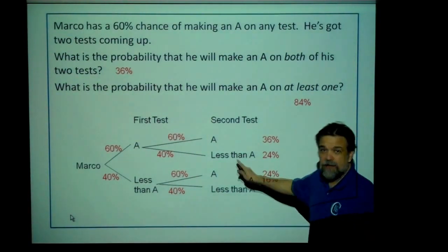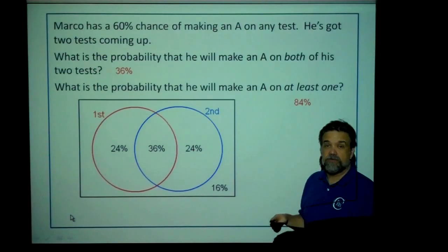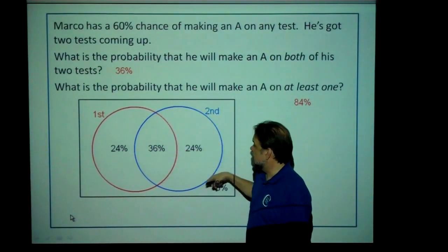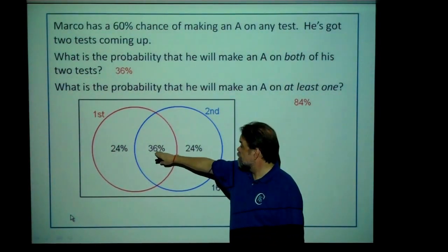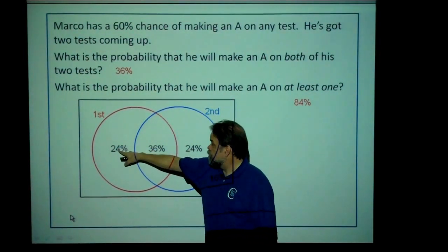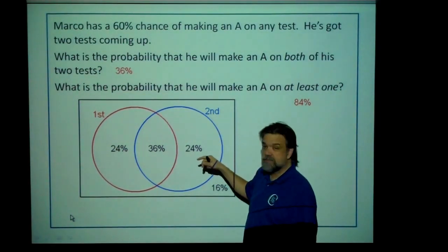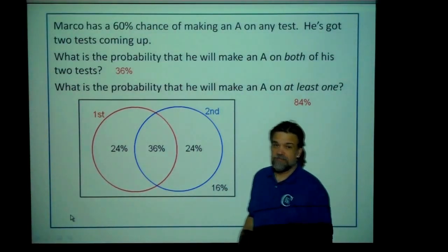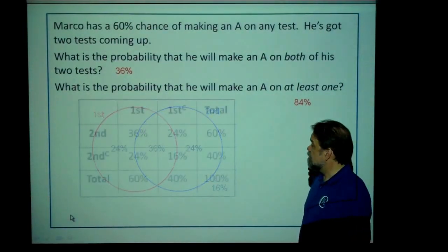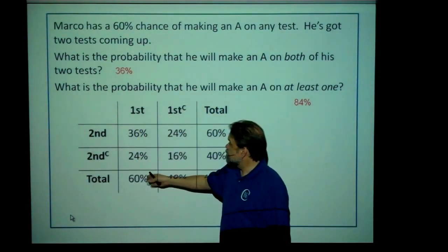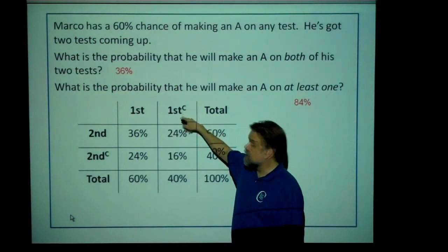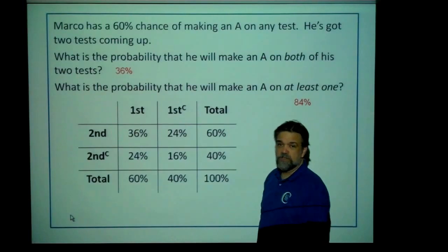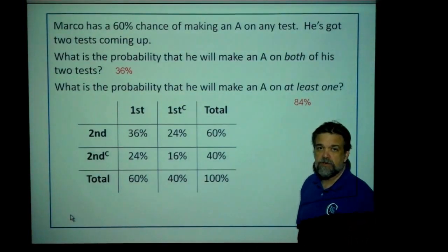You don't have to use the tree here. You can use a Venn diagram if you want to describe this. Here's the first test, here's the second test: 36% chance of making an A on both. This 24% means he made an A on the first one but not on the second one, since it's not in the second circle. And here's the 16% chance of no A's. You can also use a table: made an A on the first test, did not make an A on the first test, made an A on the second test, did not make an A on the second test, and the corresponding probabilities.